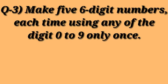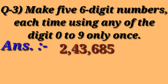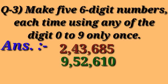The third question is: make five 6-digit numbers, each time using any of the digits from 0 to 9 only once. Here I have made the first number: two lakh forty-three thousand six hundred and eighty-five — all digits used only once. The second number I made is nine lakh fifty-two thousand six hundred and ten. This is an open-ended question, so you can write any 6-digit number by your own choice, but use each digit only once. I have made two numbers; the rest three you can prepare on your own.